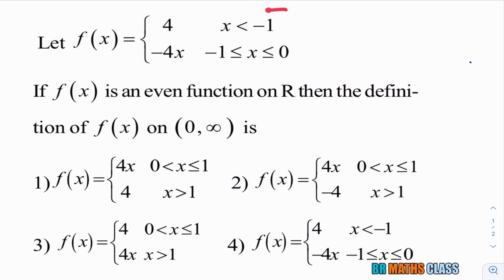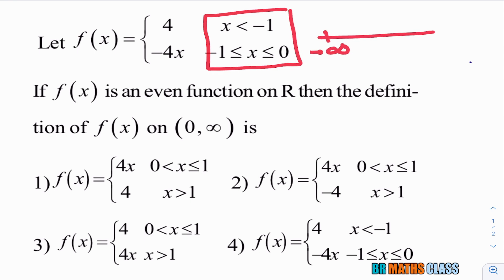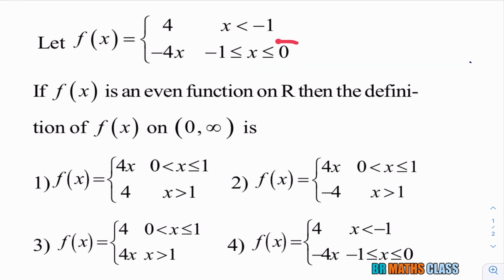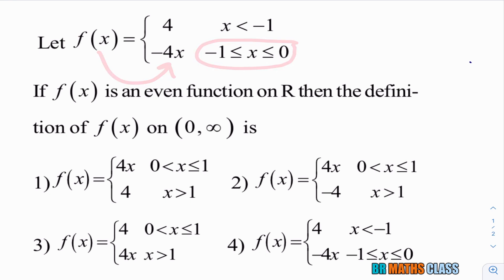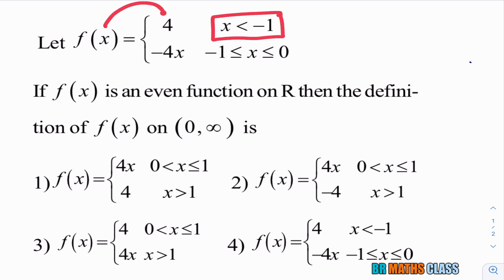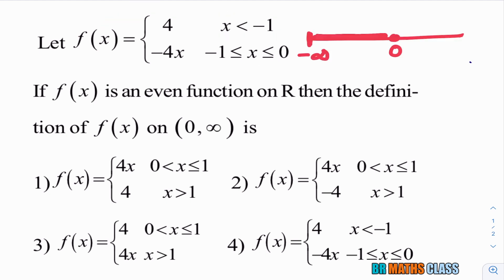If you observe this part, the function is defined on negative real numbers — from minus infinity to zero. Whenever x is between minus one and zero, the function f is minus four x. Whenever x values are less than minus one, we need to choose the function f as four.